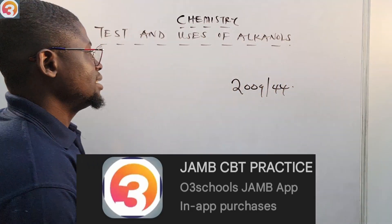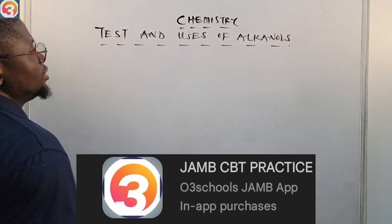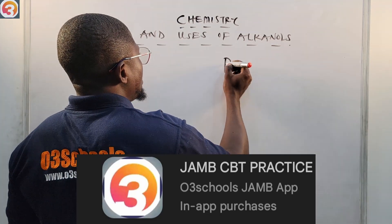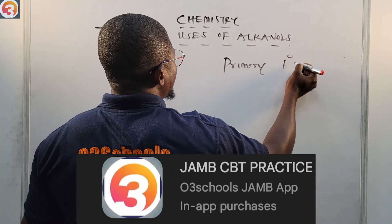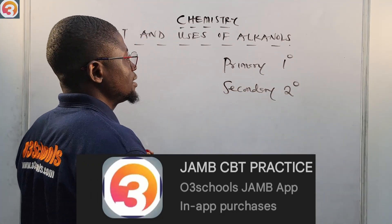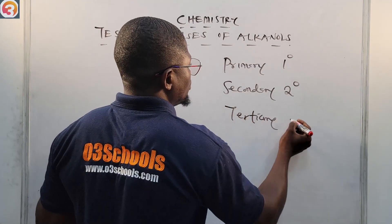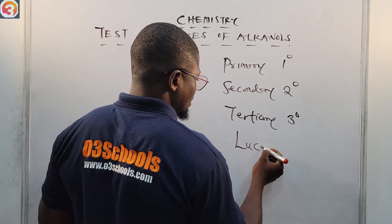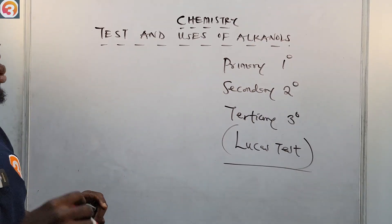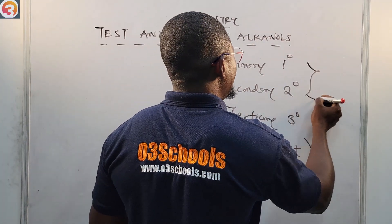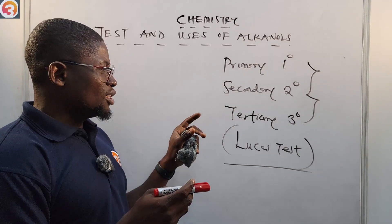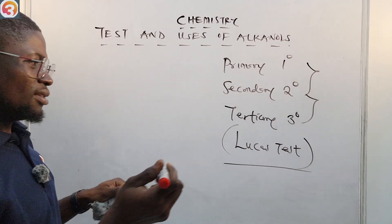Now let's go to the tests and uses of alkanols. The test used to distinguish between primary alkanols (one-degree alkanols), secondary alkanols (two-degree alkanols), and tertiary alkanols (three-degree alkanols) is called the Lucas test. It is the Lucas test that we use to distinguish between one-degree, two-degree, and three-degree alkanols. The Lucas reagent is added to an alcohol.